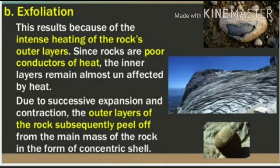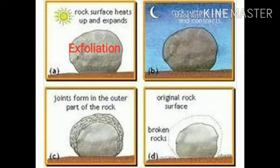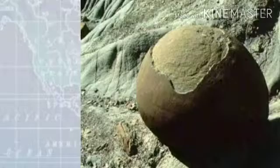Exfoliation results because of intense heating of the rock's outer layers. Since rocks are poor conductors of heat, the inner layers remain almost unaffected. Due to successive expansion and contraction, the outer layers peel off from the main mass of the rock in the form of concentric shells. In the diagram: picture A shows the rock surface heating up and minerals expanding during daytime; at night the minerals contract; picture C shows joints forming in the outer part; and picture D shows the outer layer peeling off.